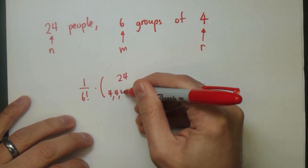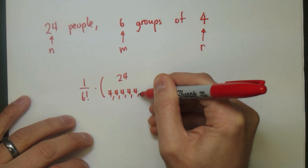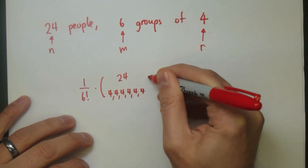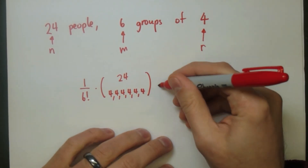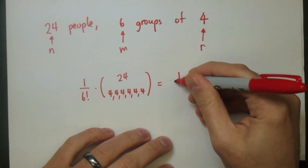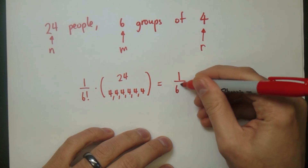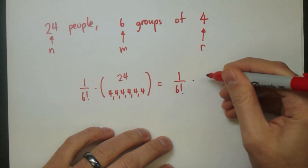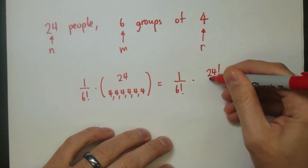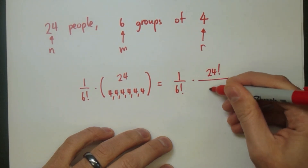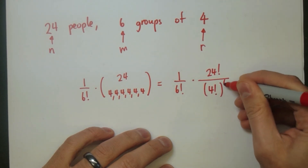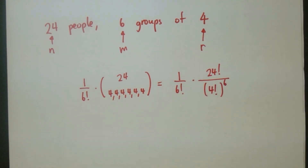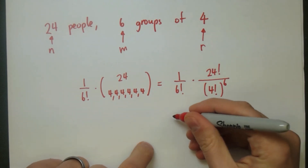The answer is 1 over 6 factorial times the multinomial coefficient: 24 choose 4, 4, 4, 4, 4, 4 — taking our 24 people and splitting them into groups of 4. In terms of factorials, this is 1 over 6 factorial times 24 factorial divided by 4 factorial to the 6th power. And this is a really large number.